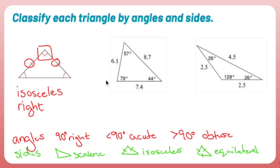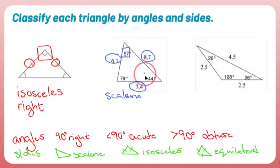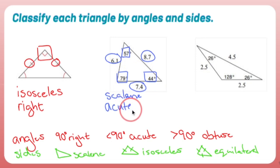No numbers needed for this one. For this one, I'm going to look at my sides first. I see that side is different from that side, which is different from that side — so all the sides are different, which means we have a scalene triangle. Looking at all three angles: 57 degrees, 44 degrees, 79 degrees — all of these are less than 90, which tells me that it's an acute triangle.